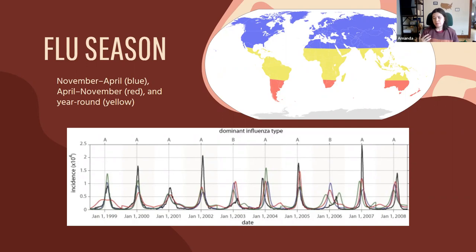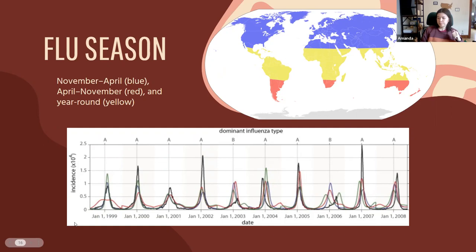As we all know, we have flu season — flu circulates through the population on a yearly cycle. Depending on which region you live in, the time of year varies. For us in the northern hemisphere, flu season is usually between November and April, peaking in February. In the southern hemisphere, it's primarily the opposite — April to November — and it can occur year-round in some regions. We get different dominant influenza types year to year.